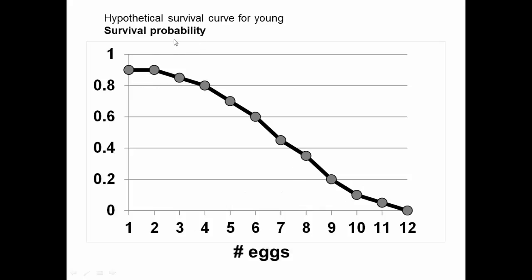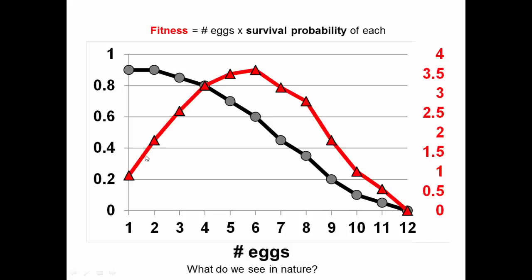Consider this hypothetical survival curve for young that are produced. If one egg is laid, that individual has about a 90% chance of surviving. Two eggs laid, still 90%. Three eggs laid, it goes down to about 85%. The more eggs are laid, the lower the survival probability for each offspring. We can calculate how many individuals survive by multiplying the number of eggs by the survival probability — that's a measurement of fitness: number of eggs times survival probability.